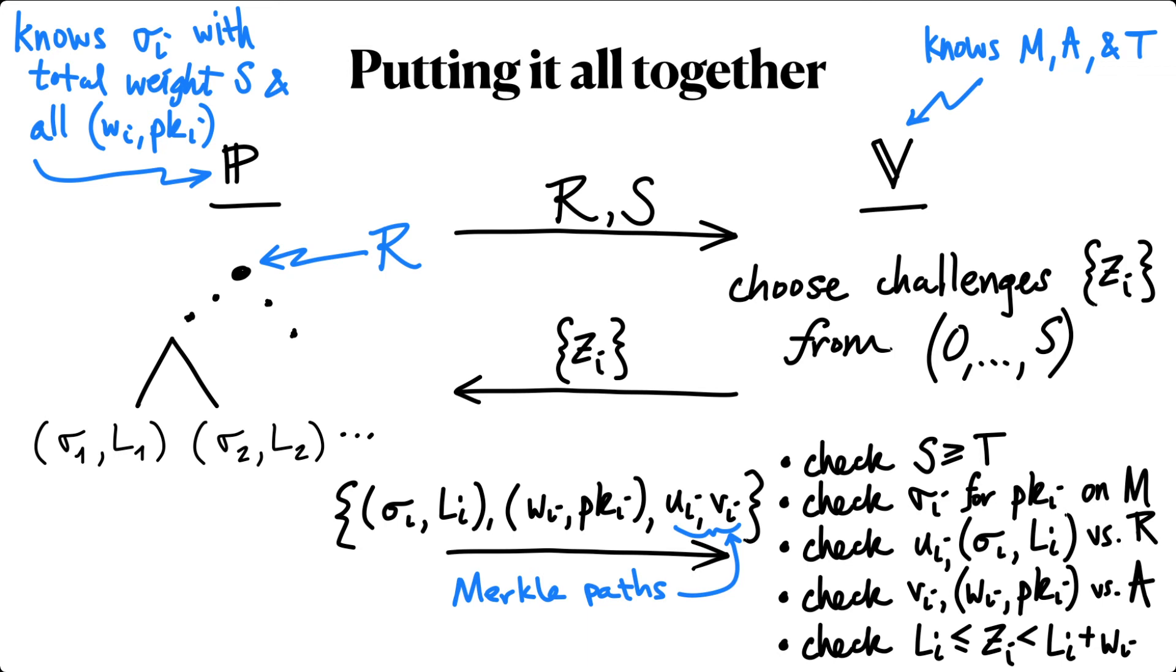The claimed total weight is at least the target weight, all the signatures and Merkle paths are valid, and all the challenges are correctly covered by the sub-range lower bounds and attester weights.